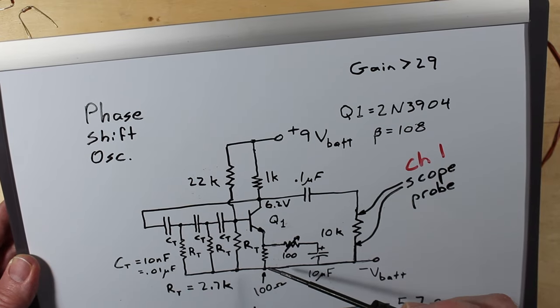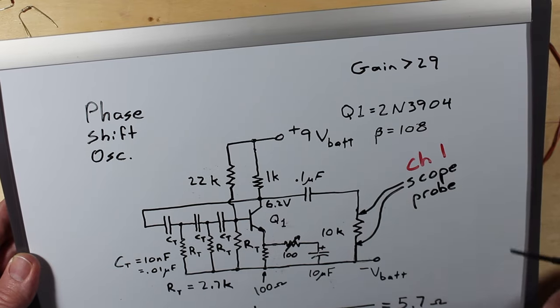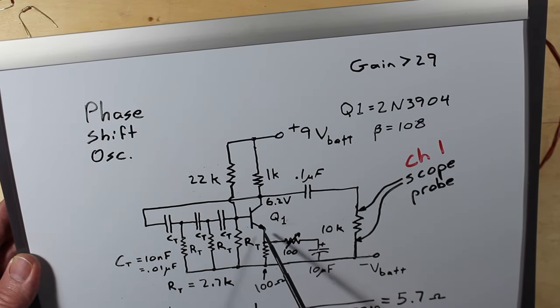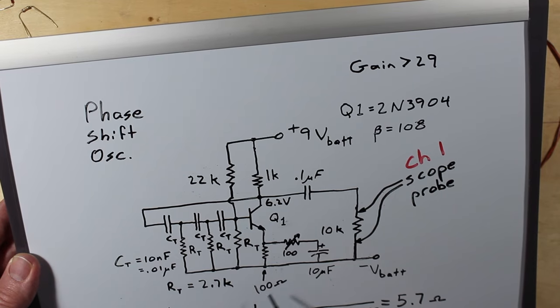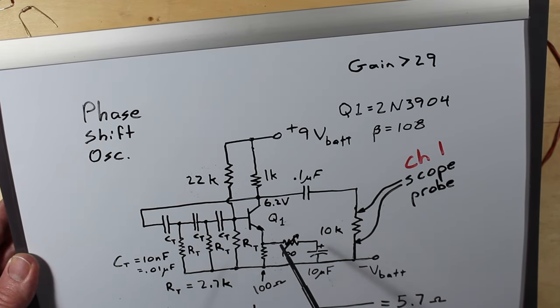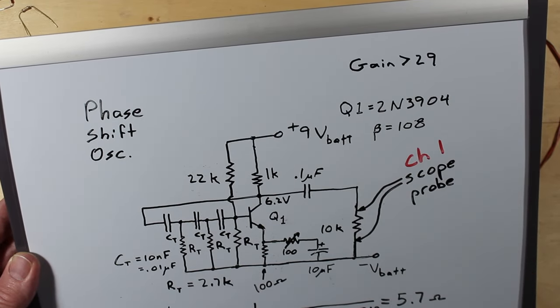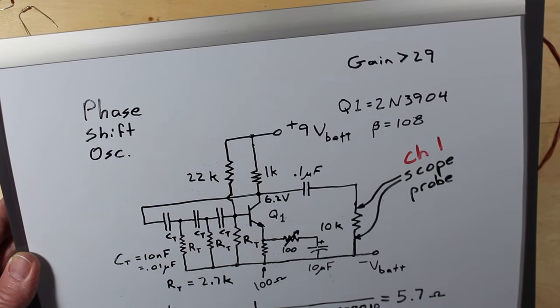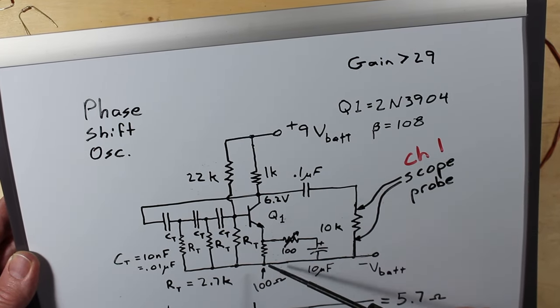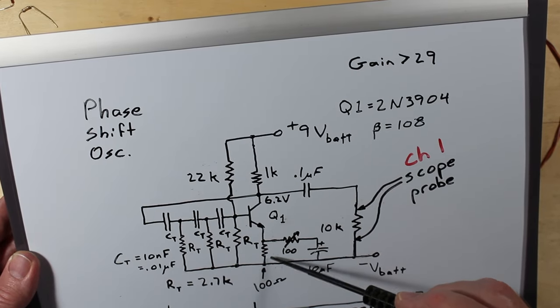So I put an emitter resistor into here to make this a little more stable. You can actually run this. You can tie the emitter directly to the negative side or ground, if you want to call it. You can tie that directly there, but then you need to put a pot in up here and it gets kind of finicky. It'll have too much gain or it'll have too little and it's pretty fussy.